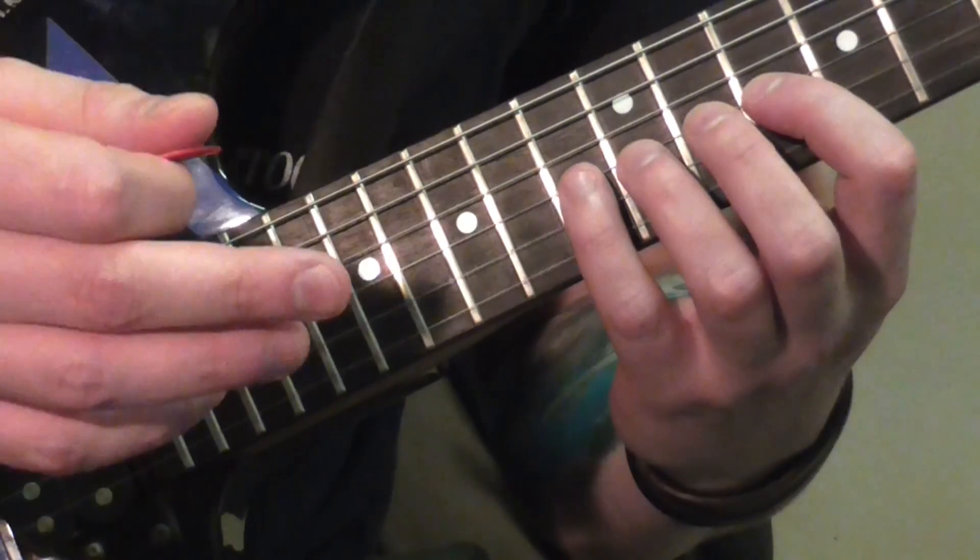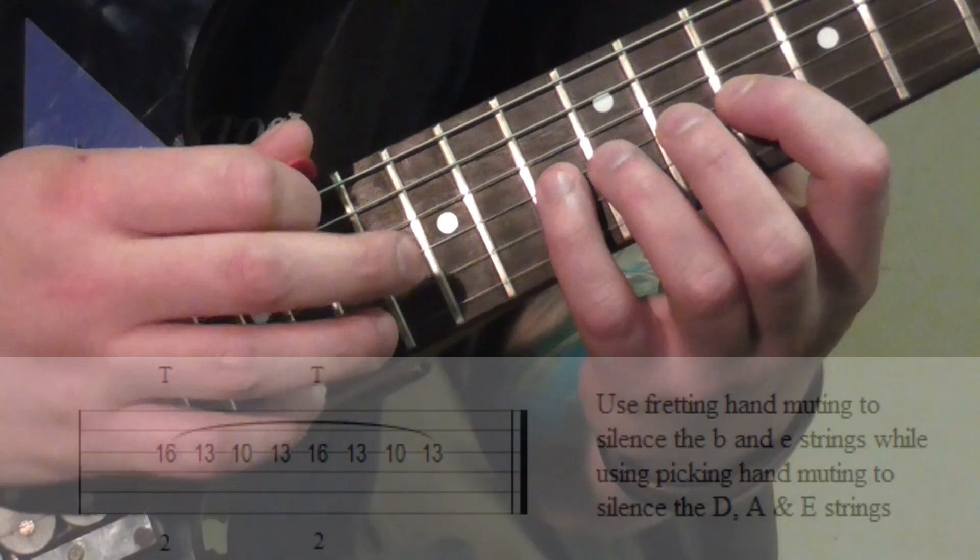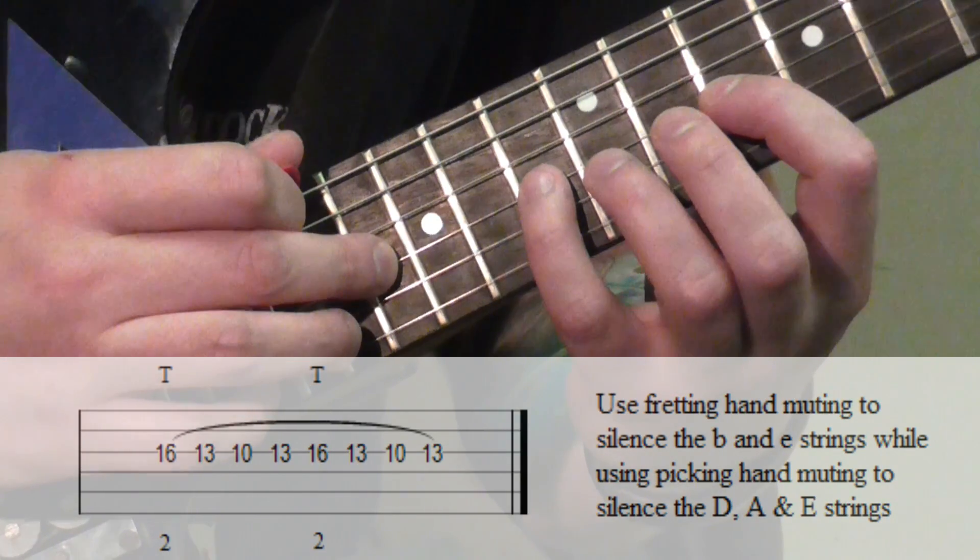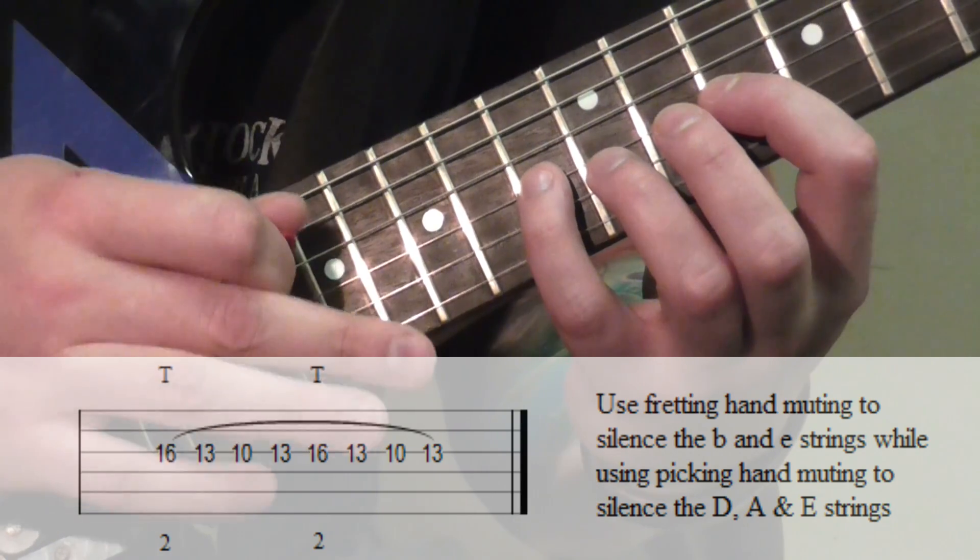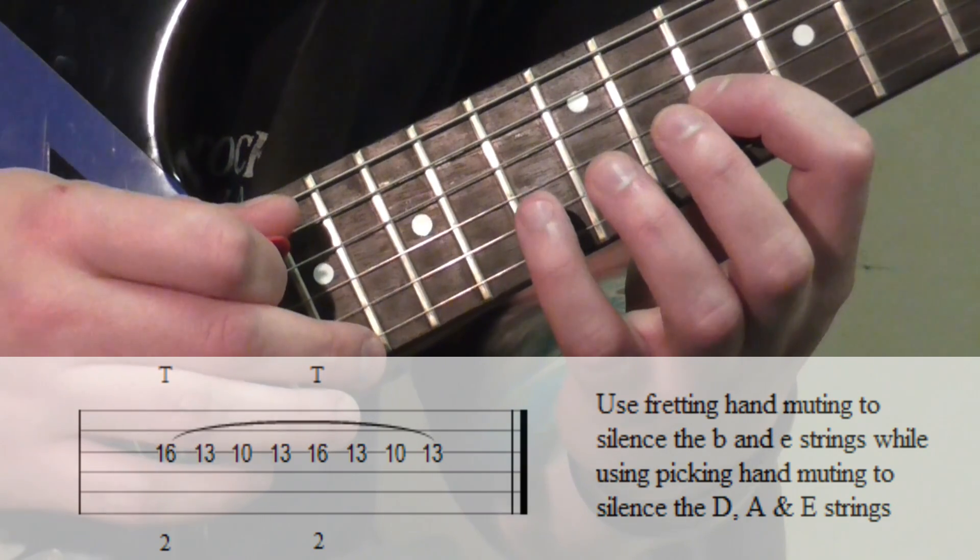With your middle finger, tap onto the 16th fret of the G string. Then you pull off to the 13th fret, then pull off to the 10th fret, and then hammer